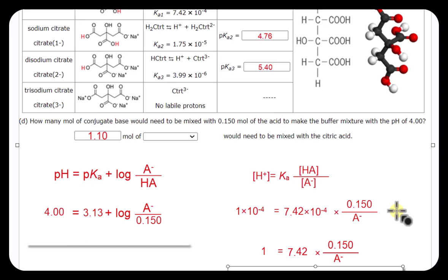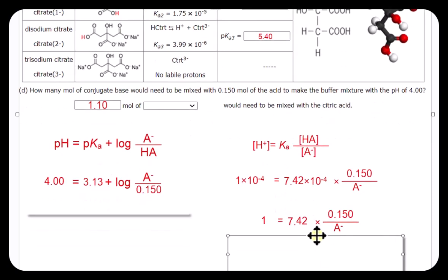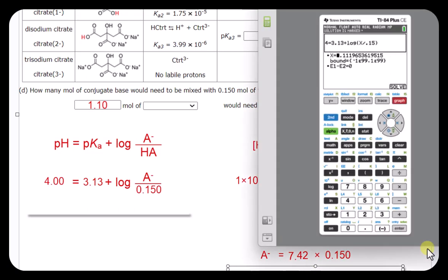So that'll save us from having to put a lot of stuff in a calculator. Use your math to help you. And now, of course, we can switch this, multiply the conjugate base by both sides, and realize that the amount of conjugate base is going to be 7.42 times 0.15. Let's pull the calculator out and see if we get the same answer.